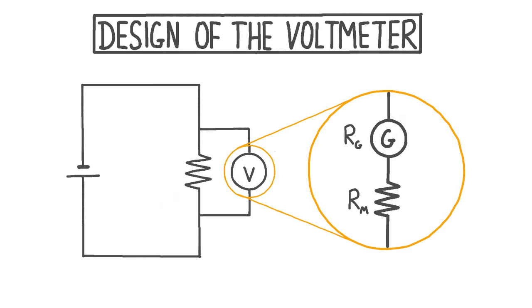In this video we'll see how we can construct a voltmeter by using a galvanometer and a resistor connected in series. We'll also see how we can calculate the required resistance of this resistor in order to build a voltmeter capable of measuring a given maximum voltage.